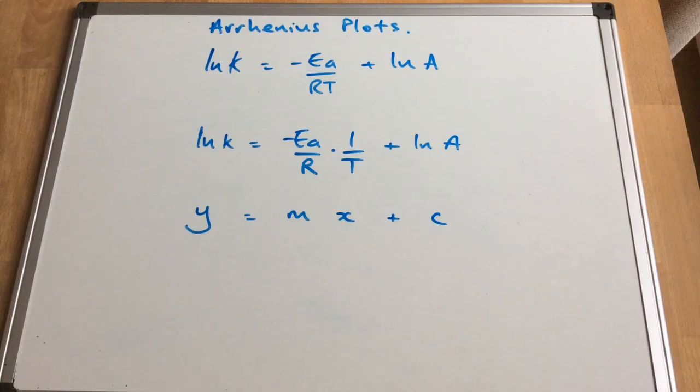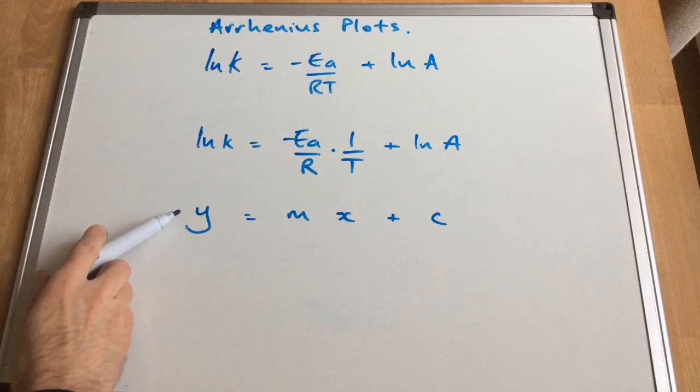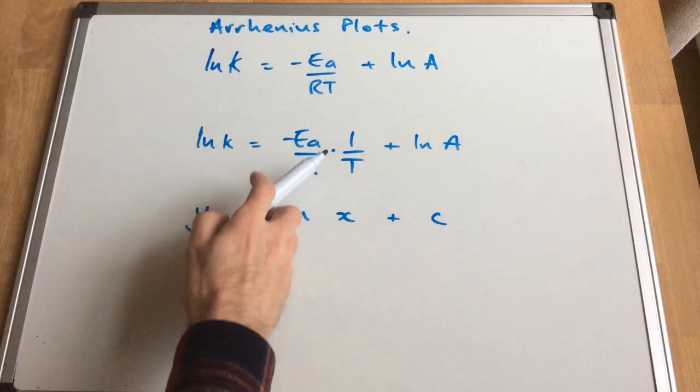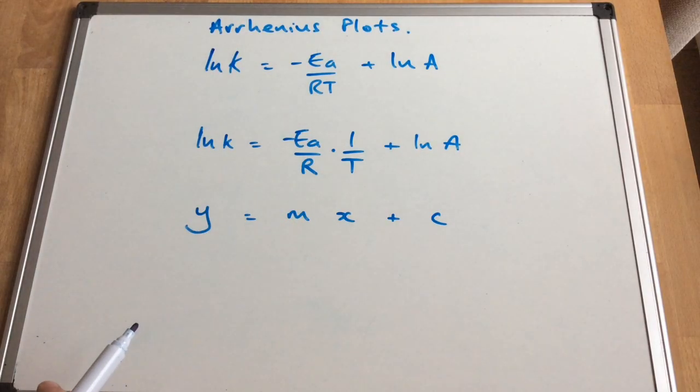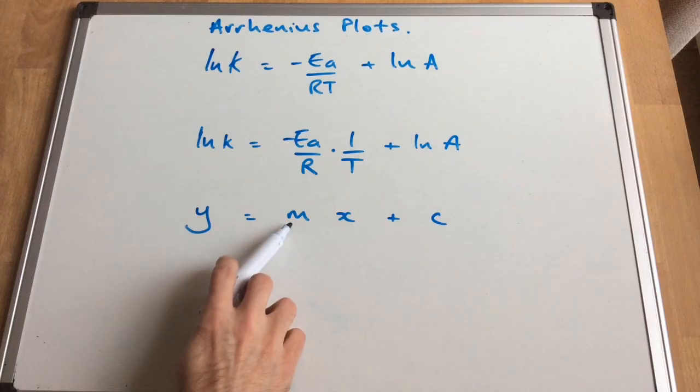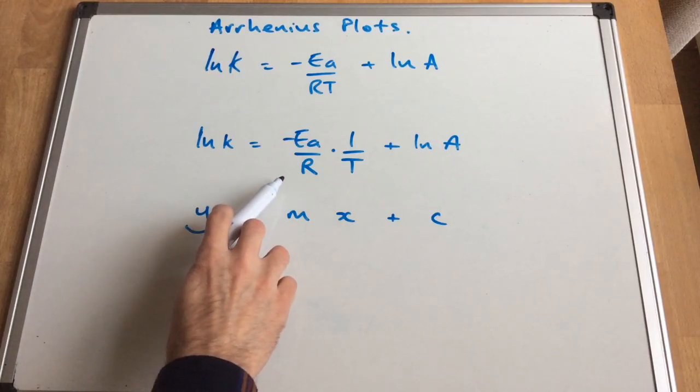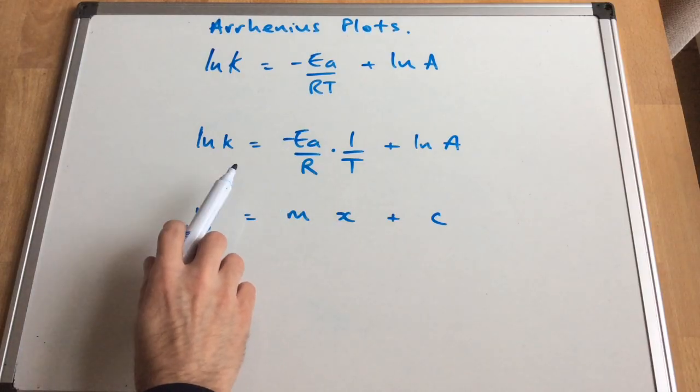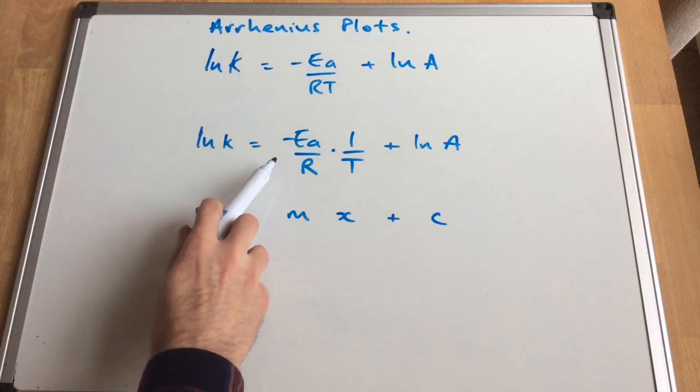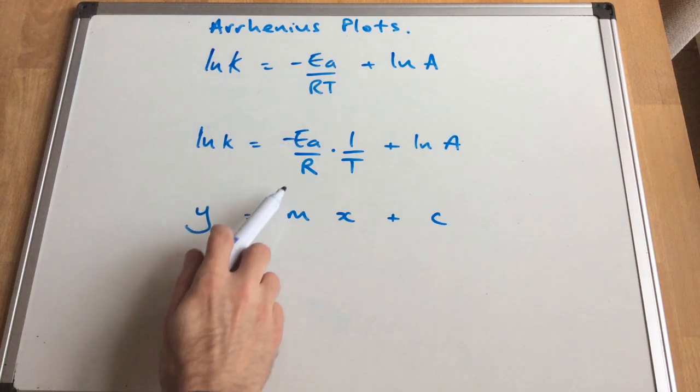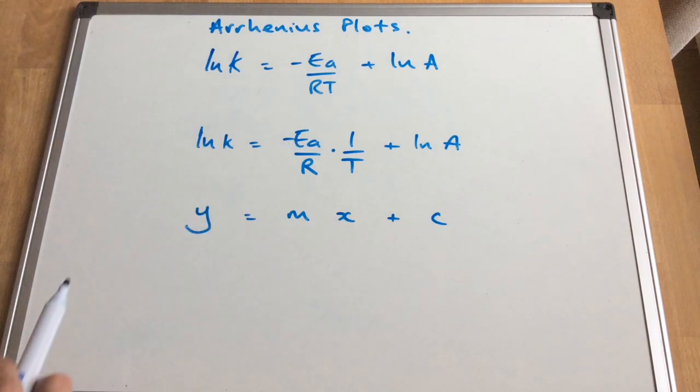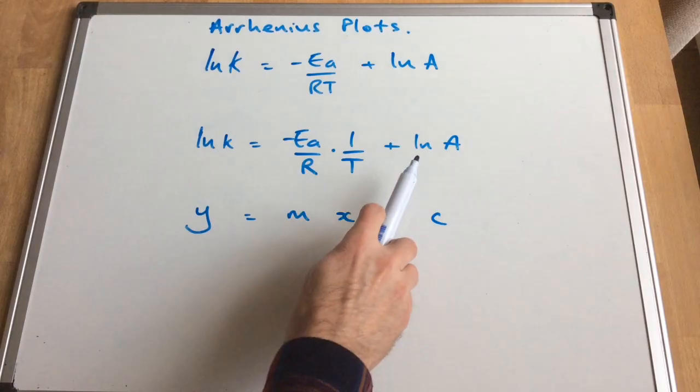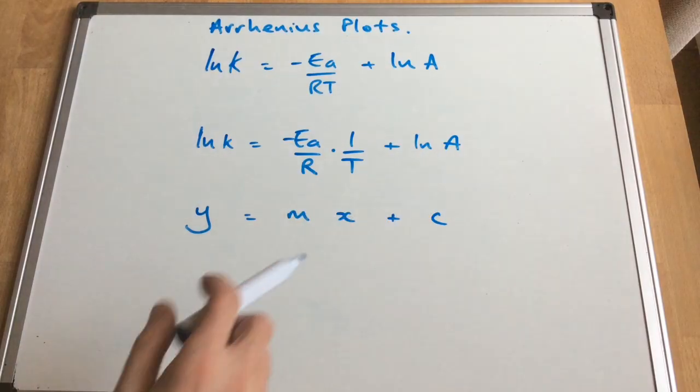We've got ln k is our y term, and our x term is 1 over the temperature. So the gradient of the graph that we're going to get, remember this is going to be a straight line graph, this is a straight line equation, the gradient will be equivalent to minus Ea over R, there's that activation energy there. Remember R is the gas constant, which is also on the datasheet, and the y intercept C will be ln of A.